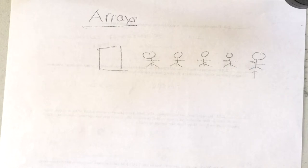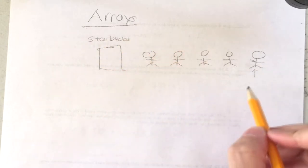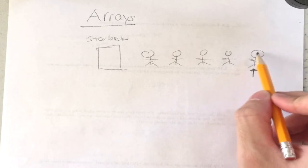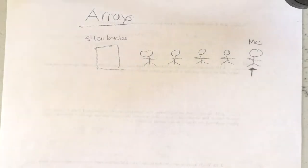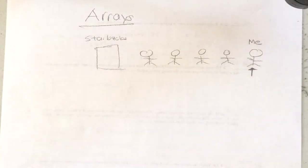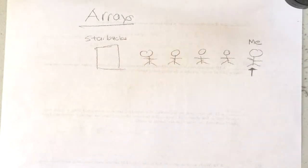Let's say I'm waiting at Starbucks for coffee. I got there too late and I'm at the end of the line. The line is too long, so instead of just waiting, Starbucks wants to hand out card numbers to everyone. When they call your card number, you go pick up your coffee and pay. That would be more fair for everyone.